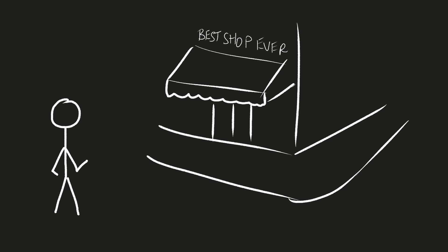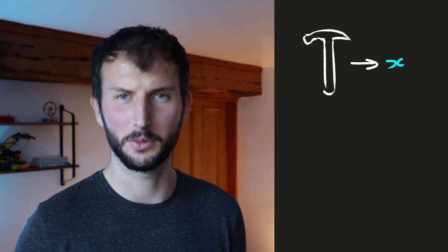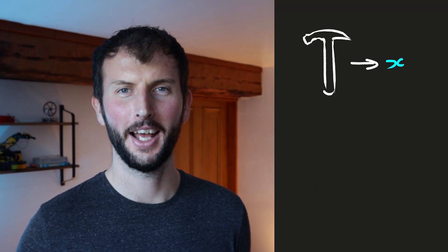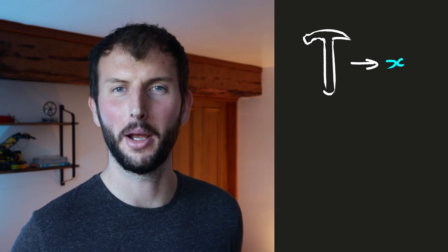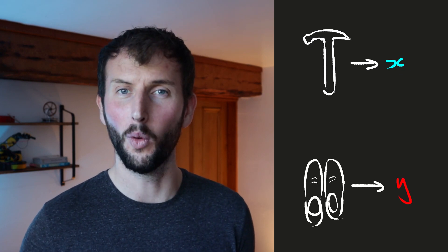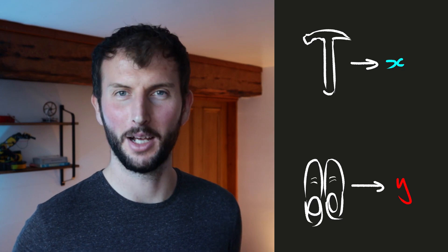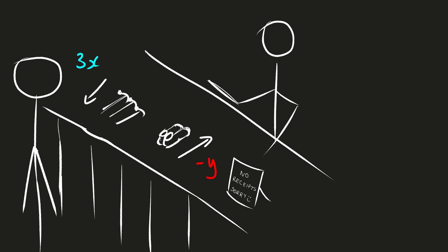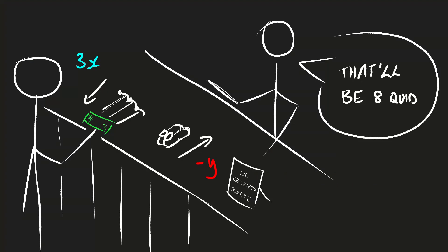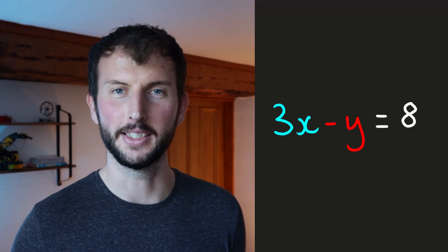Let's say that we want to go into a shop and buy and return some items. We want to buy some hammers — we'll call one hammer X — and we want to return a pair of shoes which we'll call Y. So we want to buy three hammers, so 3X, and we want to return one pair of shoes, so that's minus Y, and that equals a net transaction of £8. That gives us the equation 3X minus Y is equal to 8.